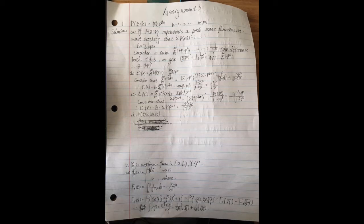Now for the second problem. In this problem, x is uniform in the interval a to b and y equals x squared.